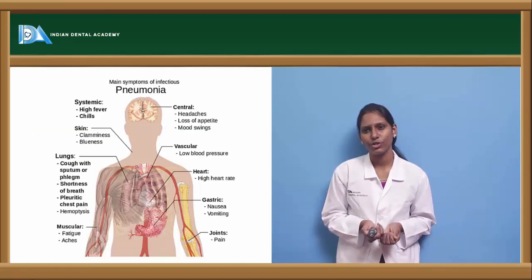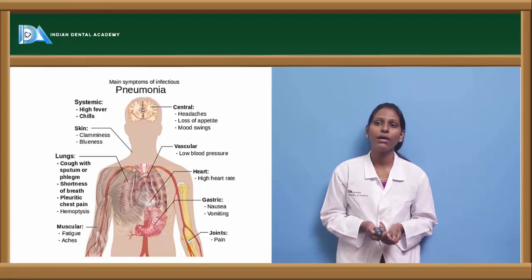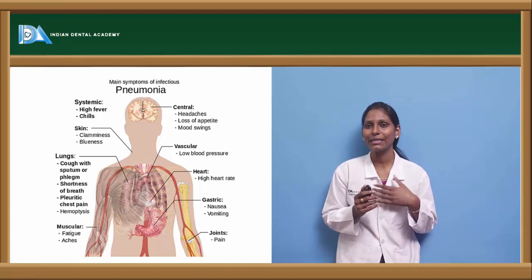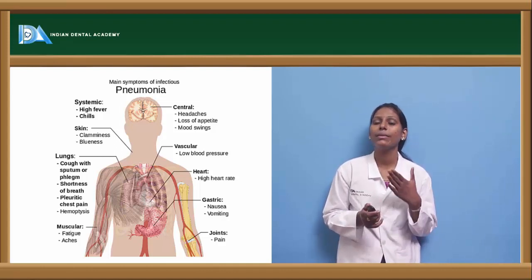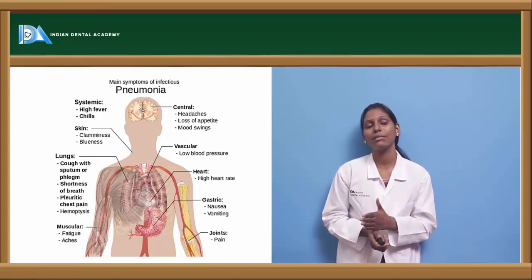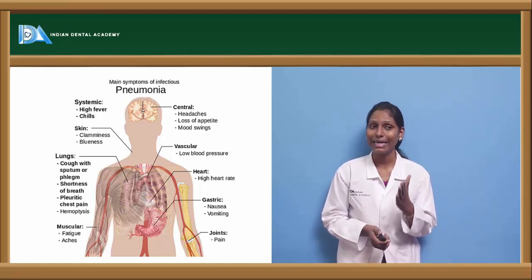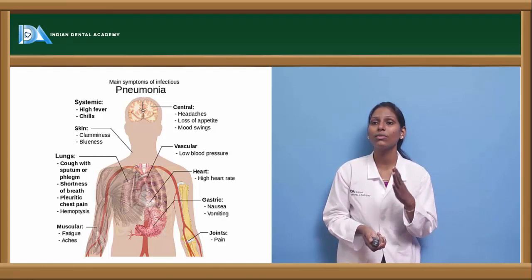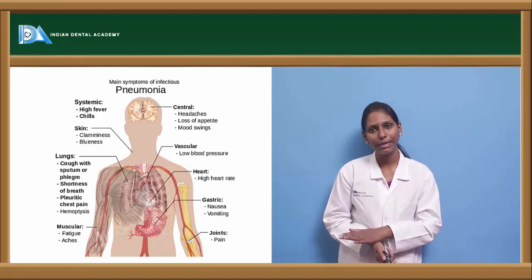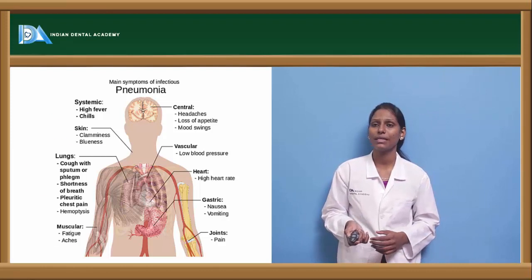Coming to the main systemic manifestations of infectious pneumonia, the most common features are high fever and chills. Patients will have clamminess, blueness due to decreased oxygen circulation, cough with sputum or phlegm, and shortness of breath. Pleuritic chest pain and haemoptysis can be seen. Muscular symptoms include fatigue and myalgia. Central manifestations include headache, loss of appetite, mood swings, low blood pressure, nausea, vomiting, joint pains, and arthritis.